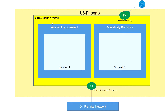Each availability domain is configured under a subnet — availability domain one has subnet one, availability domain two has subnet two. Under one region, you will get at least four availability domains. When you create an instance, it will ask you in which availability domain you want to create it. All availability domains are connected with each other through a very fast connection, around one Gbps or more.